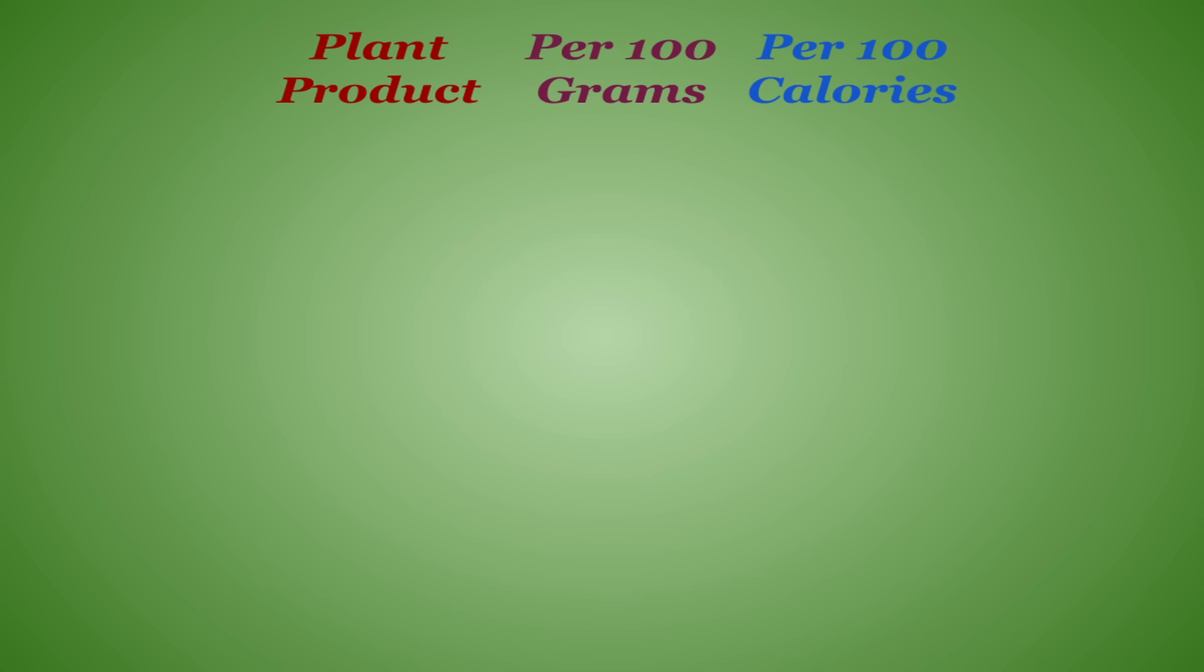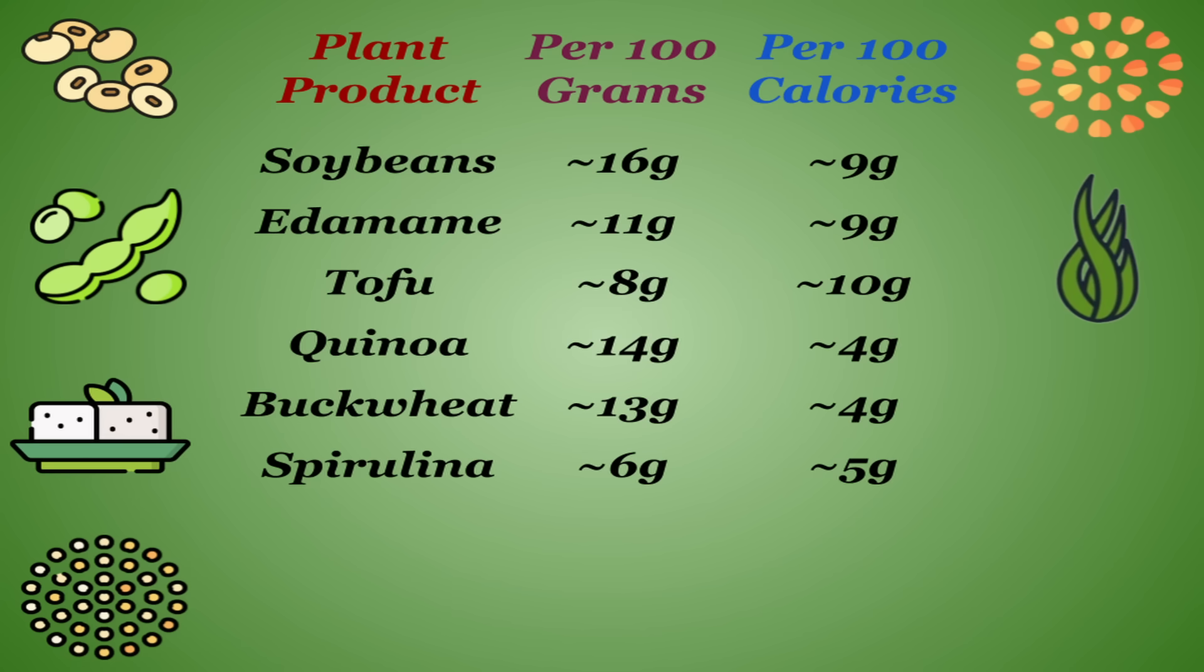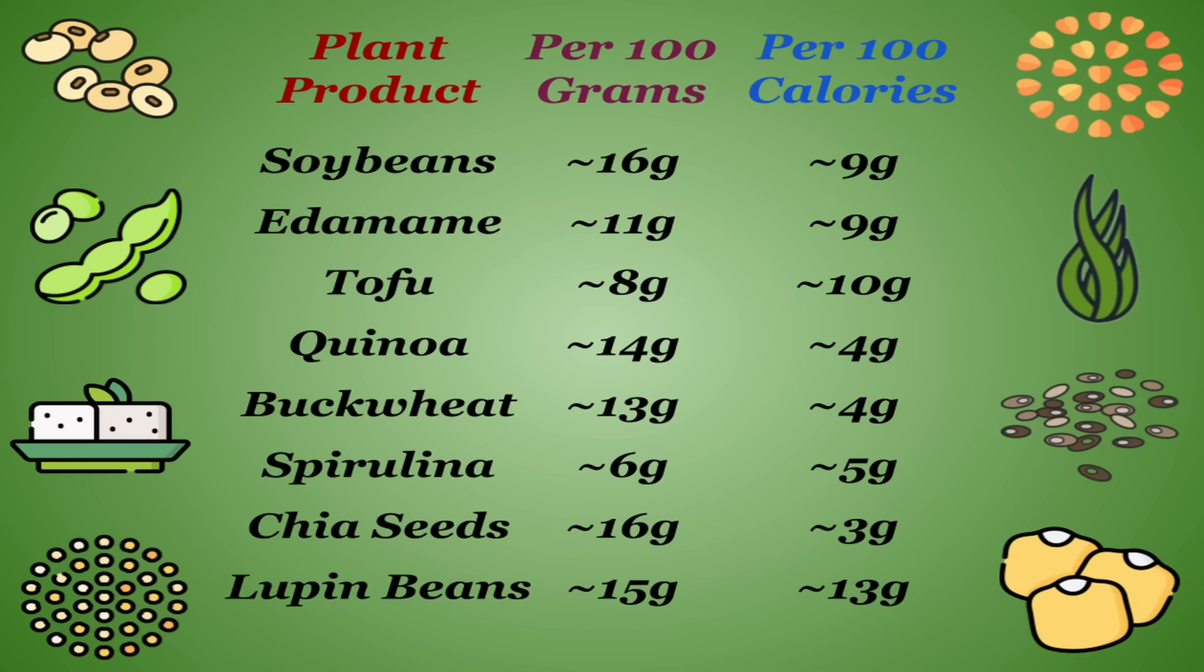And there are some plant foods that are considered complete sources of protein, including soy, quinoa, buckwheat, spirulina, chia seeds, and lupin beans, and there are more, but again, you can look those up.